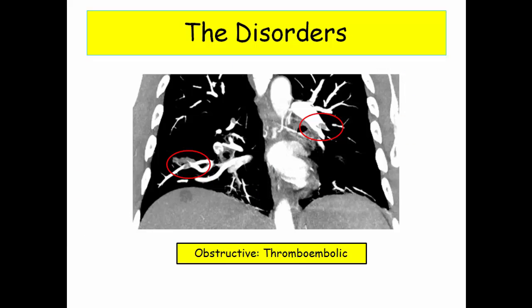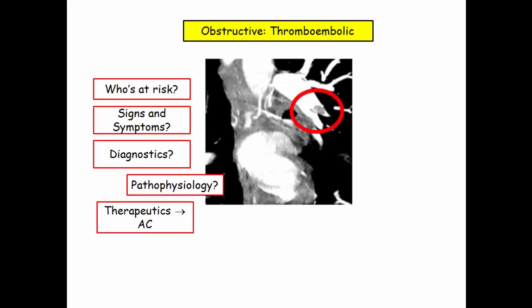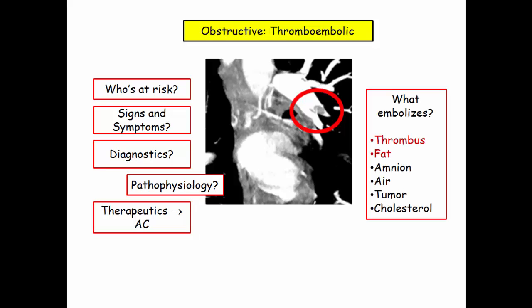Moving forward in pulmonary vascular disorders, focusing on obstructive etiologies in the form of thromboembolic disease. You will need to be aware of: who's at risk, signs and symptoms, diagnostics with the important sub-theme of pathophysiology. Therapeutics — the patient will receive anticoagulation, covered fully in hematology. Be aware that all that embolizes is not a thrombus — fat, amnion, air, tumor, and cholesterol all embolize. Besides thrombus, the NBME likes to include a question on fat emboli, covered at the end of this section.